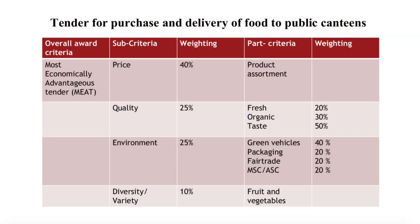Lastly, it is required that the relative weighting of award criteria be specified in procurement documents, except where a contract is awarded on price alone. Weighting might be communicated as a range of values with a suitable maximum spread — in our example, the spread is between 40%, 25%, 25%, and 10%. The court also ruled that any sub-criteria which will be applied in the evaluation must be disclosed. However, the public buyer is able to specify certain aspects of sub-criteria at a later stage.